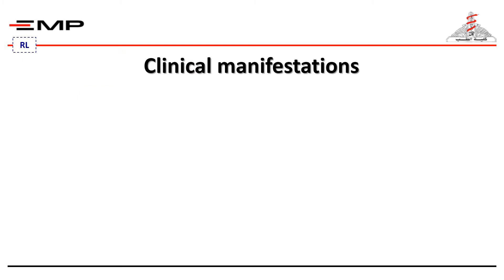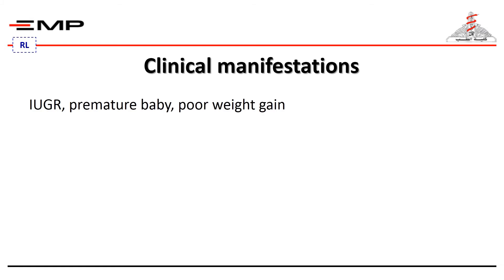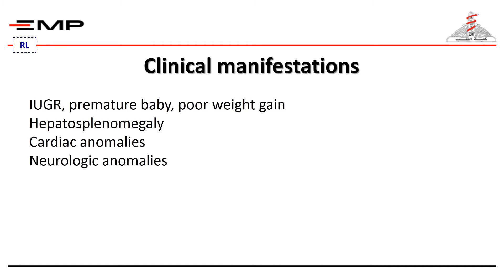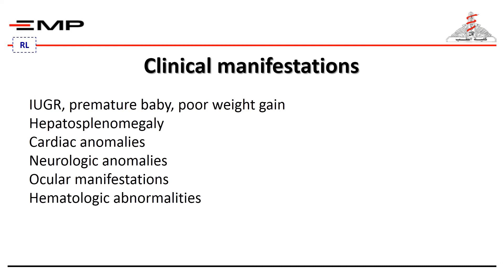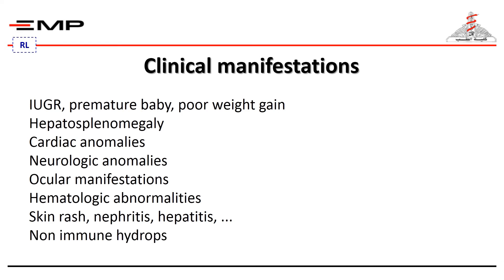Clinical manifestations of infections in neonates are rarely disease specific. A long list of diverse presentations includes IUGR, premature birth, poor weight gain, hepatosplenomegaly, cardiac anomalies such as PDA or pulmonary stenosis, neurologic anomalies such as microcephaly, hydrocephalus, seizures, mental retardation, and calcification. Ocular manifestations include chorioretinitis, micro-ophthalmia, anophthalmia, and cataract. Hematologic manifestations include anemia, thrombocytopenia, leukopenia, or neutropenia, as well as skin rash, nephritis, hepatitis, and non-immune hydrops. Combinations of these findings guide physicians to suspect congenital infection, but cannot specify the causative organism. However, some causative organisms have characteristic combinations which raise a specific diagnosis.